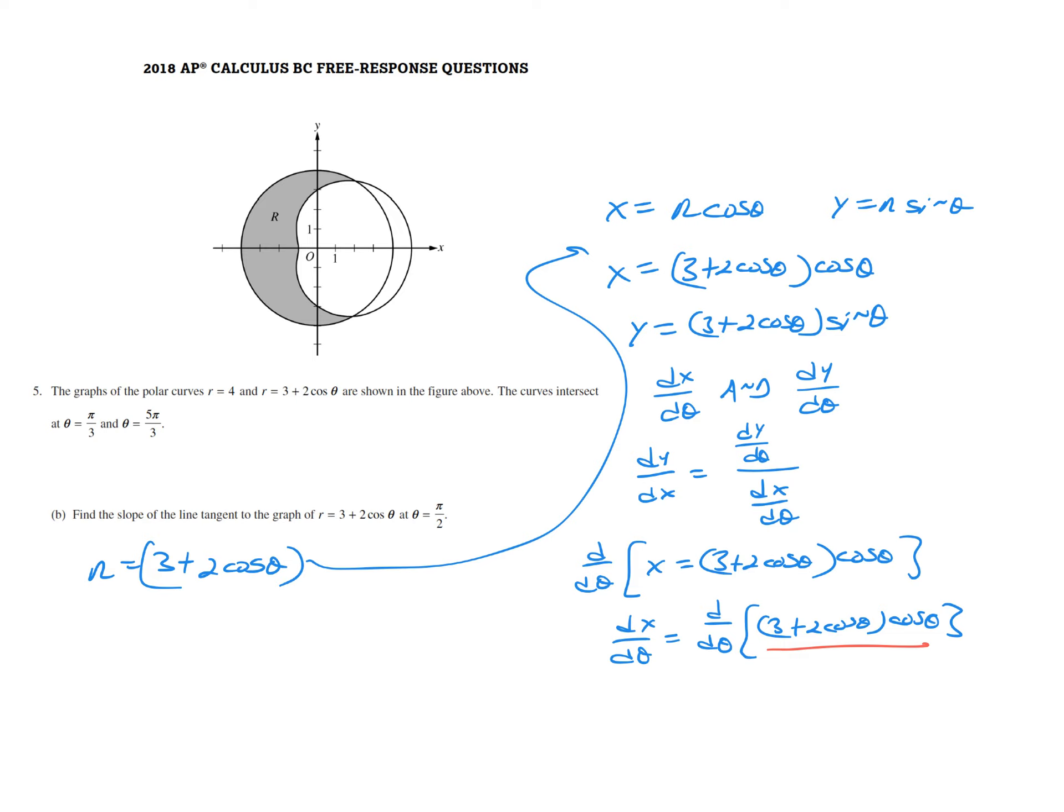When we look at the y equation, putting the cosine theta in, you're going to have the product form whether or not you distribute this sine in. I think I said cosine by mistake. If you have r being 3 plus 2 cosine theta, then sine theta. When you differentiate that with respect to theta, you're stuck in product form either way.